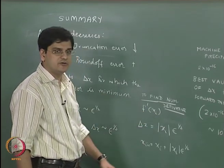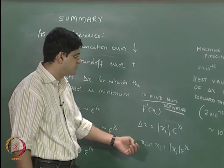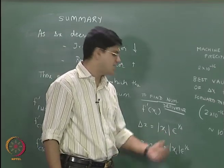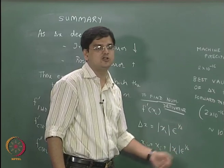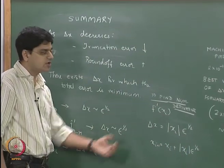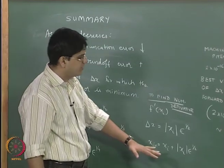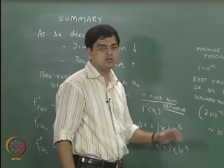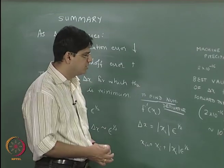Now, if you want to get the numerical derivative f dash using central difference formula, it is going to be absolute value of x_i multiplied by epsilon to the power one third, because this is what we get over here. So, this is how we are going to practically implement the overall use of numerical differentiation.